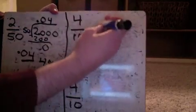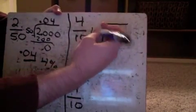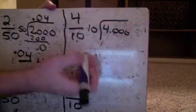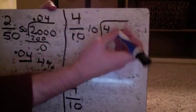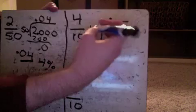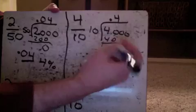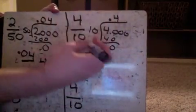Now, over here, 4/10. If I go to divide this out, so 4.000. 10 doesn't go into 4, but it goes into 40. So I'll put my decimal point straight up there. It goes into 40 four times. Four times 10 is 40. That's it. Zero. My decimal is this.